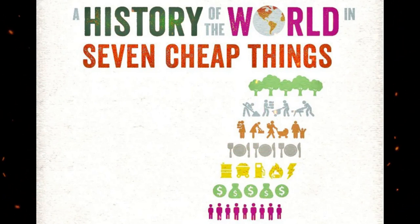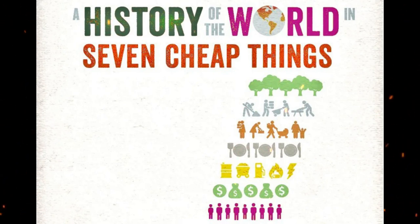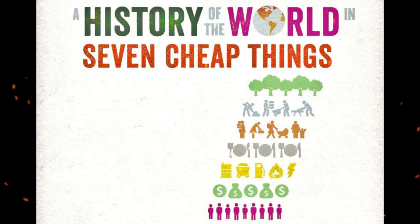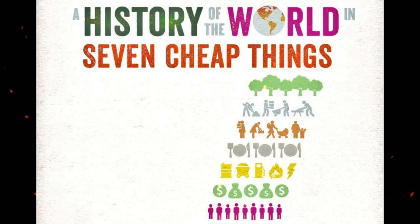In the colonial era, cheap work and cheap food were themselves also cheap energy — they provided the muscle power needed to expand profits. Since the late 19th century, cheap energy has come from the fossil fuel industry. Patel and Moore examine the impact of this industry not only on nature, but on food, work, and the other cheap things.